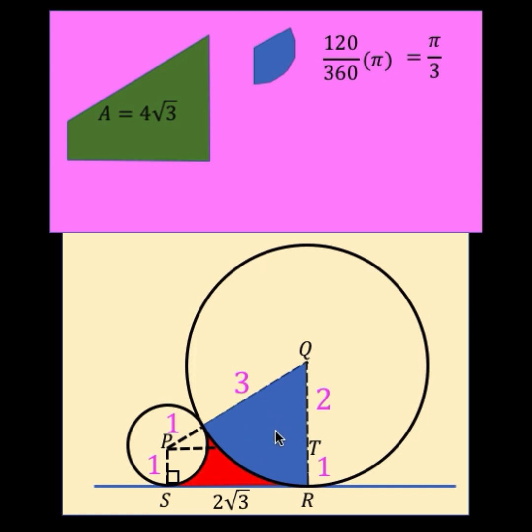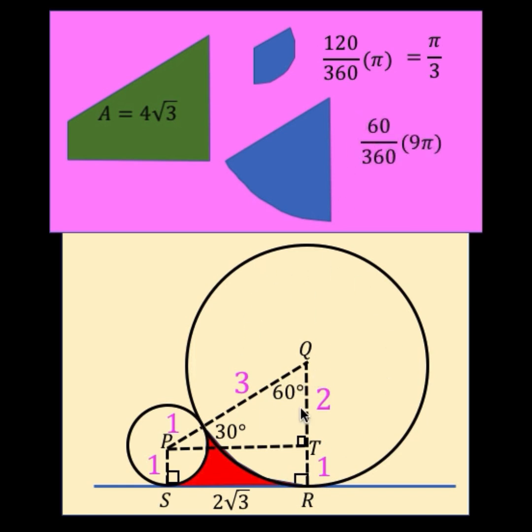Now let's get the area of this bigger sector. Again the angle here is 60 degrees, so 60 out of 360 times the area of the bigger circle. So pi r squared is the formula where r is 3. So 3 squared is 9 times pi or 9 pi. Simplifying we arrive at 3 pi over 2 for the area of this bigger sector.